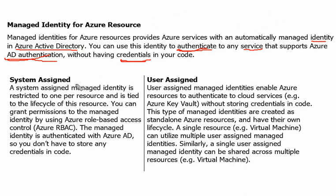Two types of identities are available in Azure for any resource: system-assigned and user-assigned. A system-assigned managed identity is restricted to one identity per resource and is tied to the lifecycle of that resource — if the resource is deleted, the identity is also deleted. You can grant permissions to the managed identity using Azure role-based access control, and the managed identity is authenticated with Azure Active Directory, so you don't have to store any credentials.